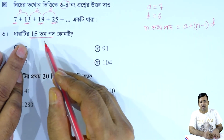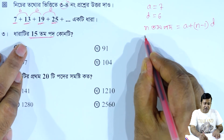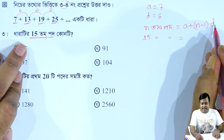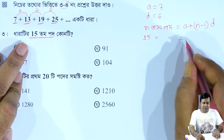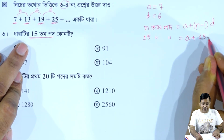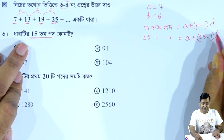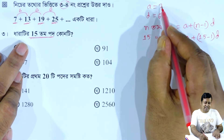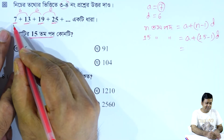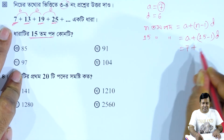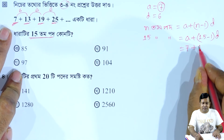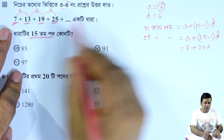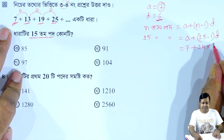We are told to find the 15th term. So n equals 15. The first term a is 7. Therefore, the 15th term equals 7 plus 15 minus 1 into d, where d equals 6. The 15th term equals 7 plus 14 into 6.